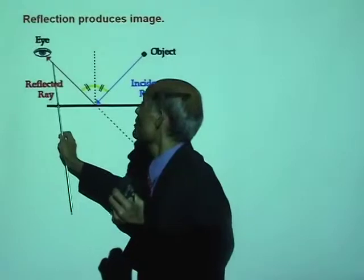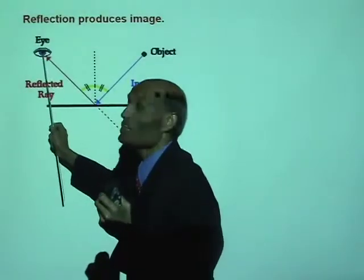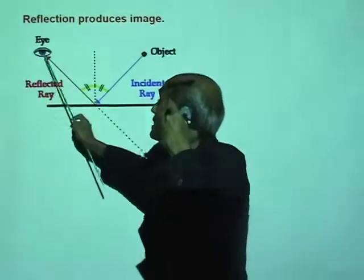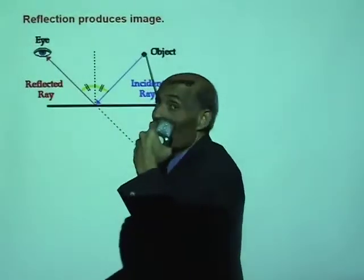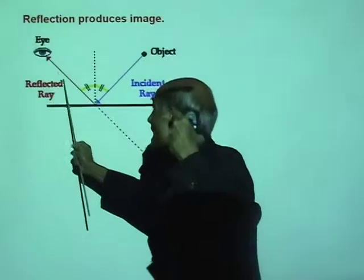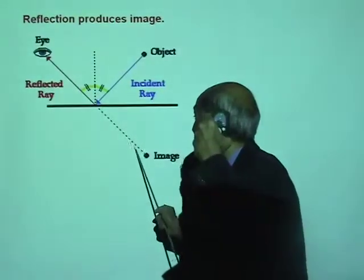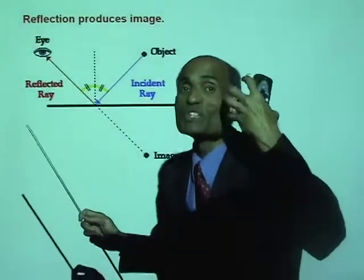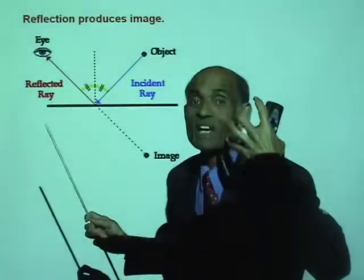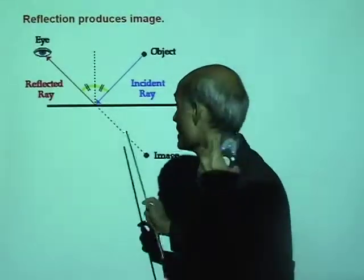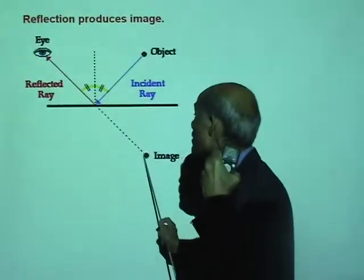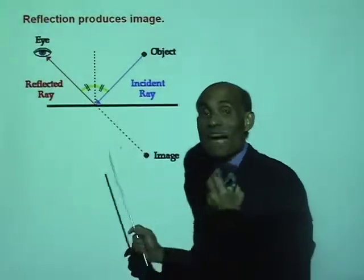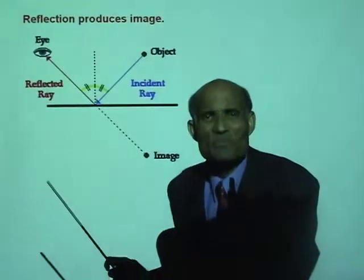But when the reflected light reaches your eye, your brain does not interpret it as coming from the object — your brain interprets it as coming directly from that point behind the mirror. Because your brain is conditioned to think that light only travels in straight lines. So your brain sees the light coming from there, and that is called an image.